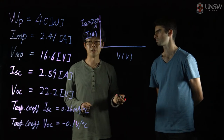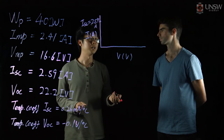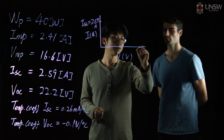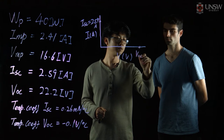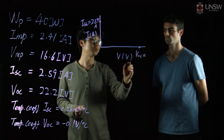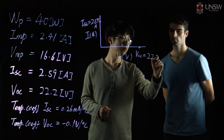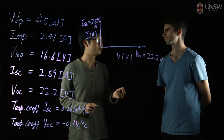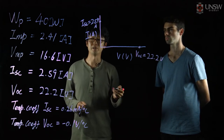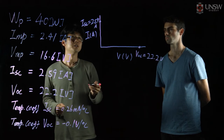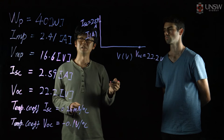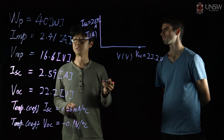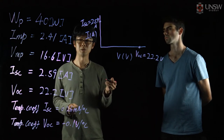The second point we need to find is the open circuit voltage, where the current equals zero along the x-axis, which in these specs is 22.2 volts. Another important point is both the current and voltage at the maximum power point. The current at the maximum power point is 2.41 amps and the voltage at the maximum power point is 16.6 volts.